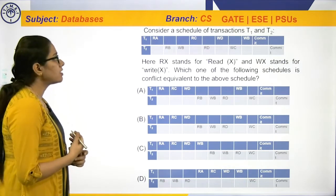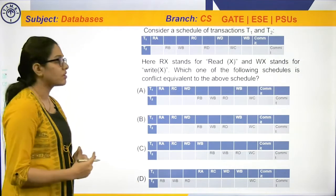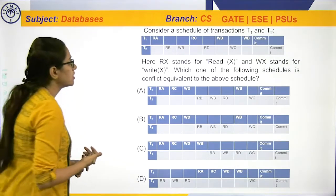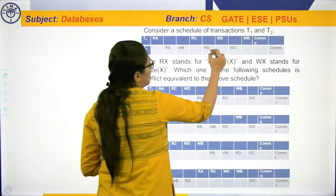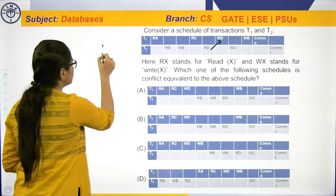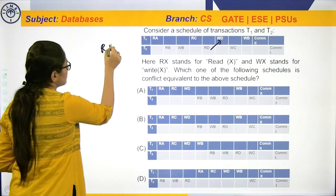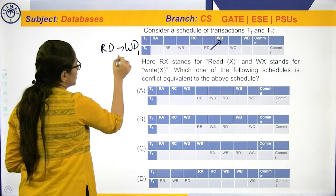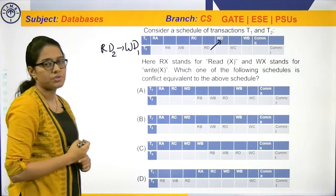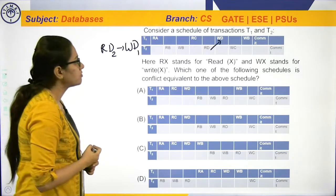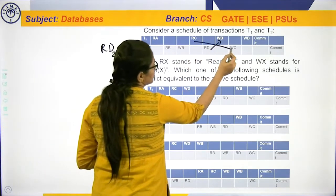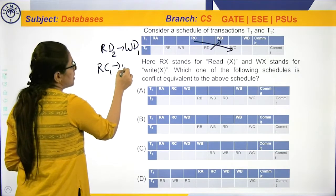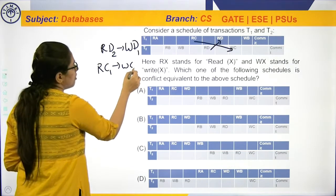First, let's see what are the RW or WW conflicts present in the given transaction. You can see here Rd and Wd — first Rd and then Wd should be done: Rd of T2 and Wd of T1. Then Rc and Wc: Rc of T1 followed by Wc of T2.